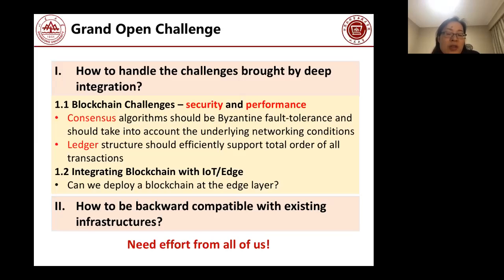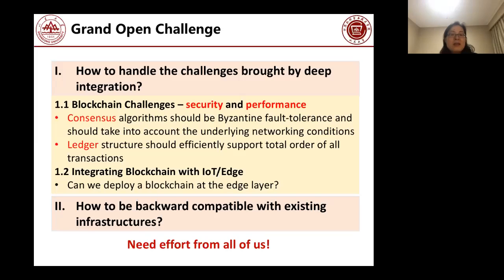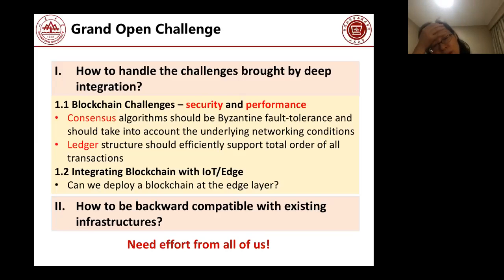To improve throughput, we need something different from the chain of blocks. There is another ledger structure called DAG — Directed Acyclic Graph — but it is not secure because it cannot guarantee total ordering of all transactions. How to design a new ledger structure that is both secure and offers higher throughput is another very big challenge. Additionally, deploying blockchain at the edge layer and ensuring backward compatibility with existing infrastructures are further open challenges.